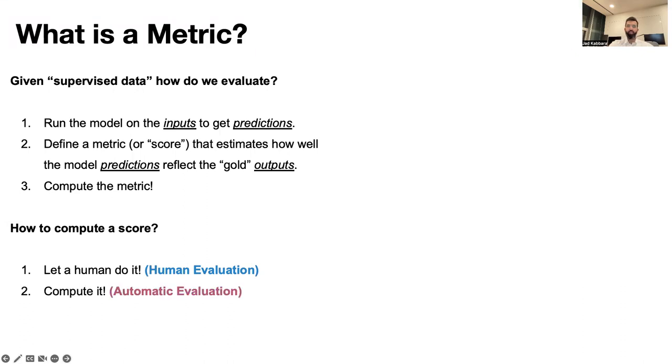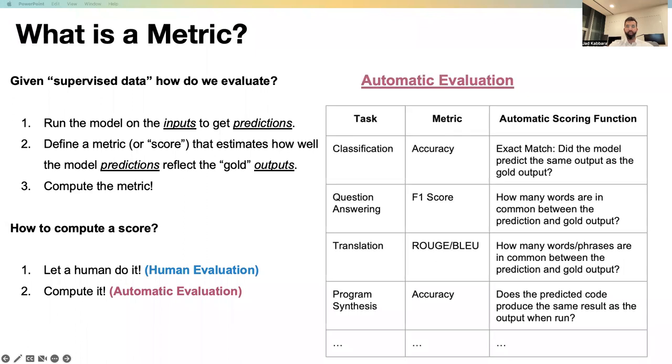And how do we compute a score? Essentially, there are two ways. Either we ask humans to rate the output of a model, or using an automatic metric, we compute the score.